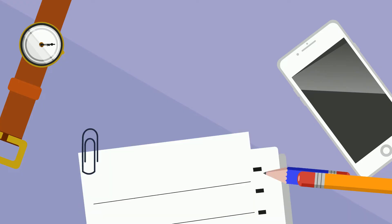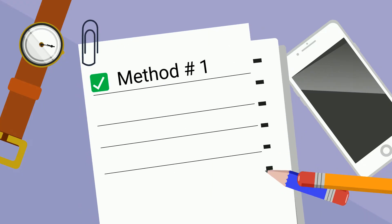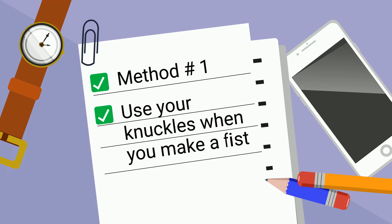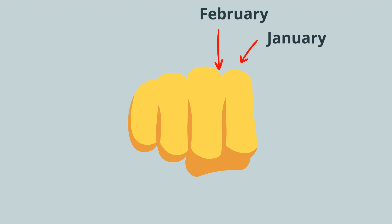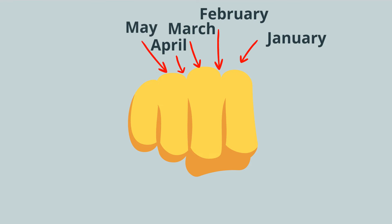Method number one works like this: you can use the knuckles on your hand. You start with the knuckle closest to your thumb — this knuckle will be January. The space in between the knuckles will represent February, and then you repeat: March, April, May, June, July.